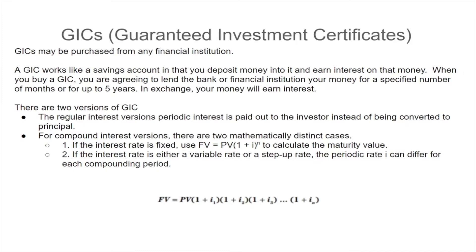A GIC is a guaranteed investment certificate. They usually run for five years — you're basically handing the bank, lending institution, or credit union your money for a period of time, up to five years, and saying you're going to hold onto that and rent that money from me. I promise I'm not going to take it out. You can take it out, but there are penalties. So effectively it's a relatively long-term investment, and in return they're going to pay you interest. There are a couple of ways these things work.